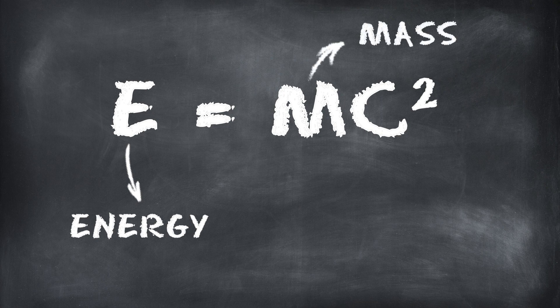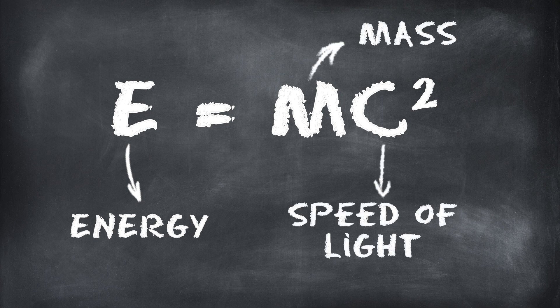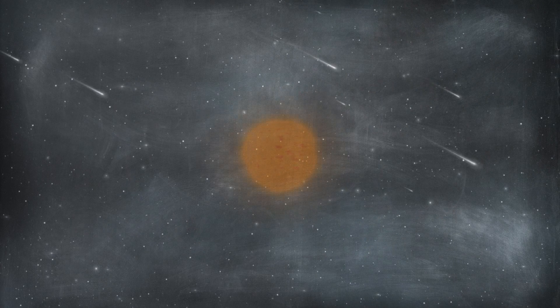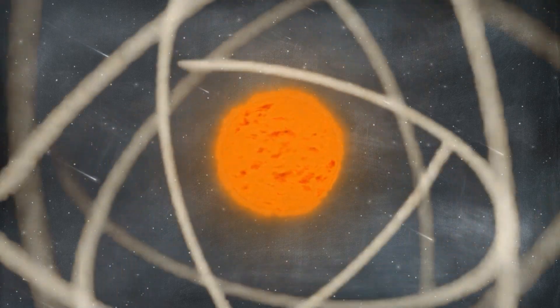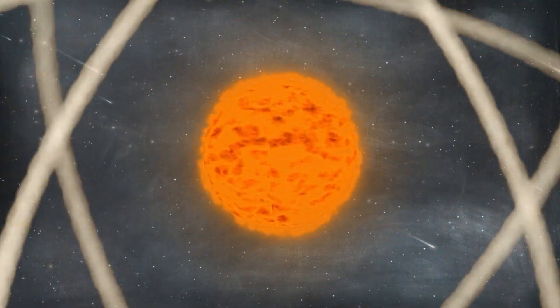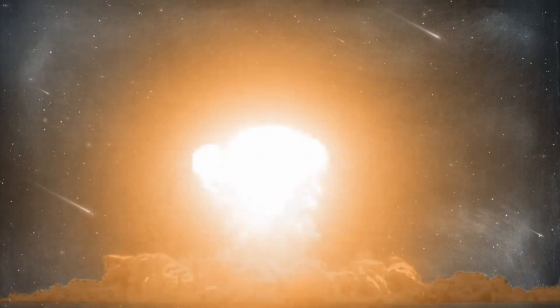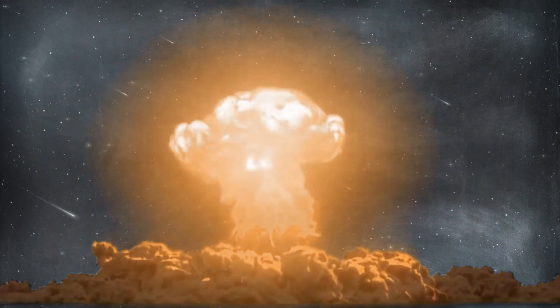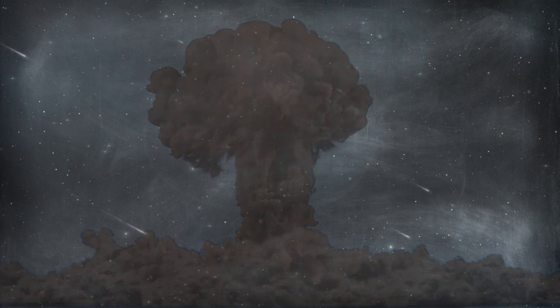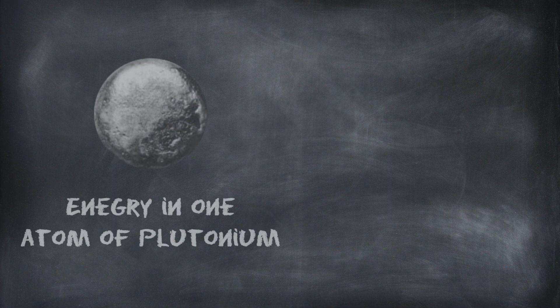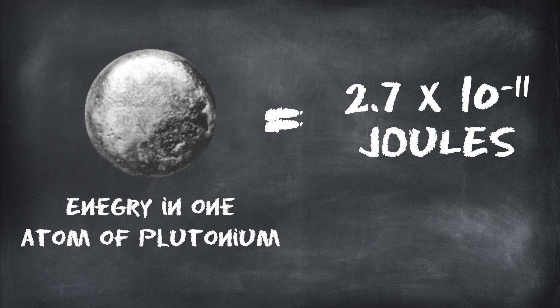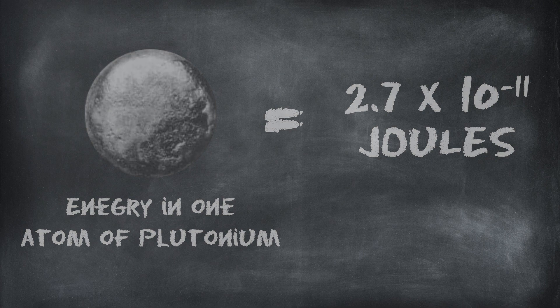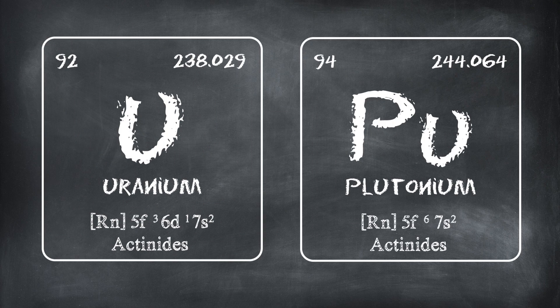In simpler terms, E = mc² means the energy of a system equals its mass multiplied by the speed of light squared — a simple equation with infinite applications, ranging from the functioning of the sun to subatomic physics. Little did Einstein know his discovery could be used to create mankind's most dreadful weapon, as E = mc² can calculate the energy released from any fuel, including nuclear elements like uranium and plutonium.